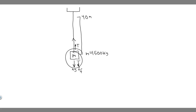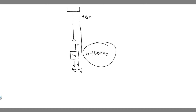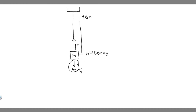In this problem we have an elevator traveling up 40 meters. The mass is 1500 kilograms, and it's going to have a bunch of forces acting on it: the force due to gravity, the force of friction, and the tension force from the cable that's going to be pulling it upwards.